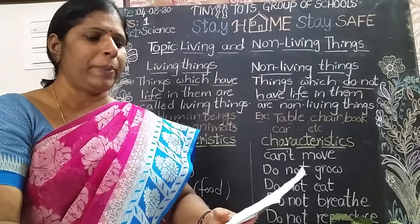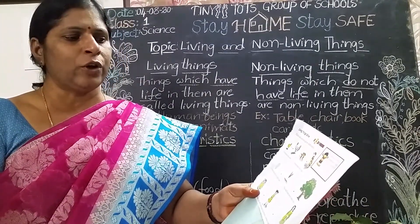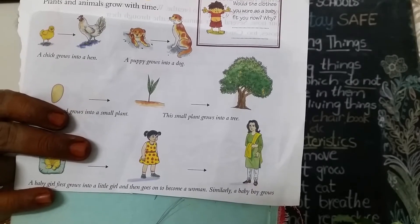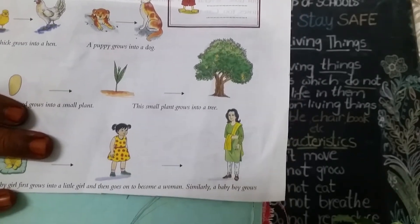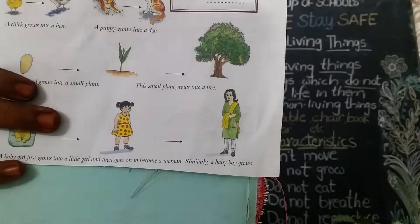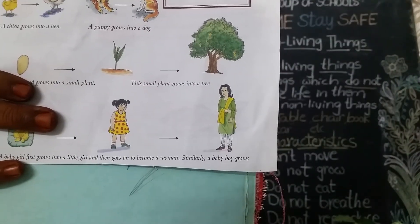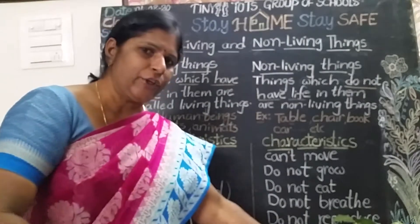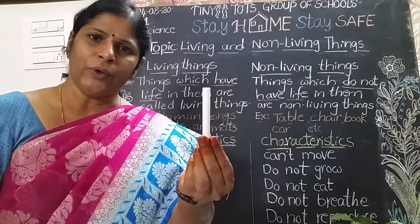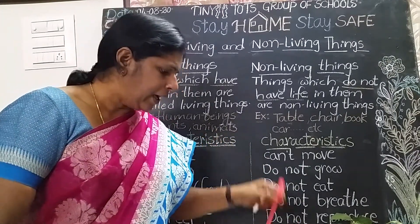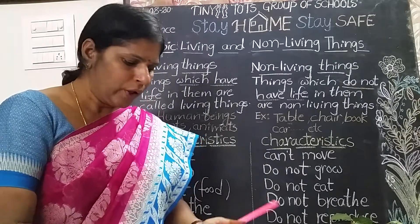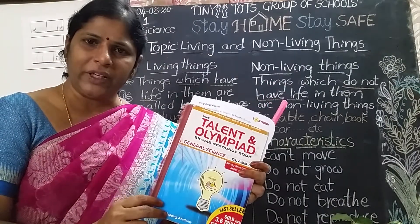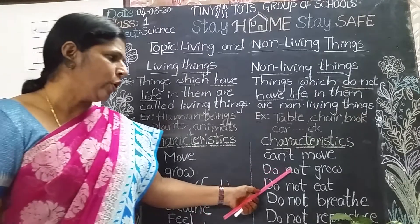Your pet dog also gives birth to young ones, and that puppy grows into a dog. A kitten grows into a cat, and a mango seed grows into a mango plant. Non-living things do not grow — a duster, a book, a chair do not grow. These are non-living things; non-living things do not grow.